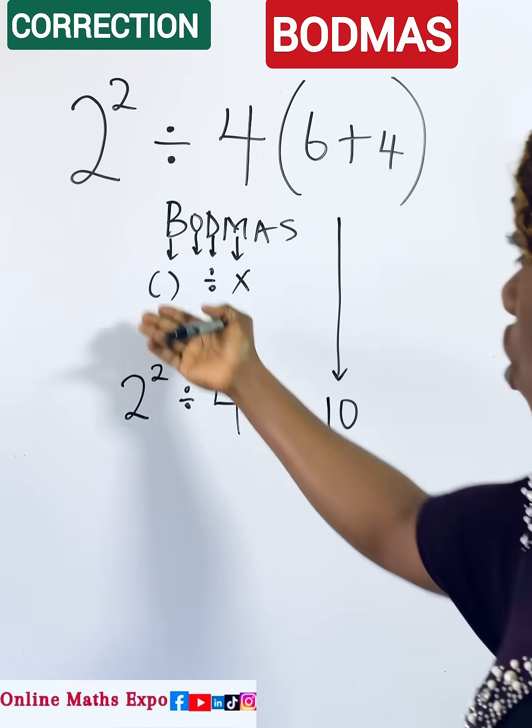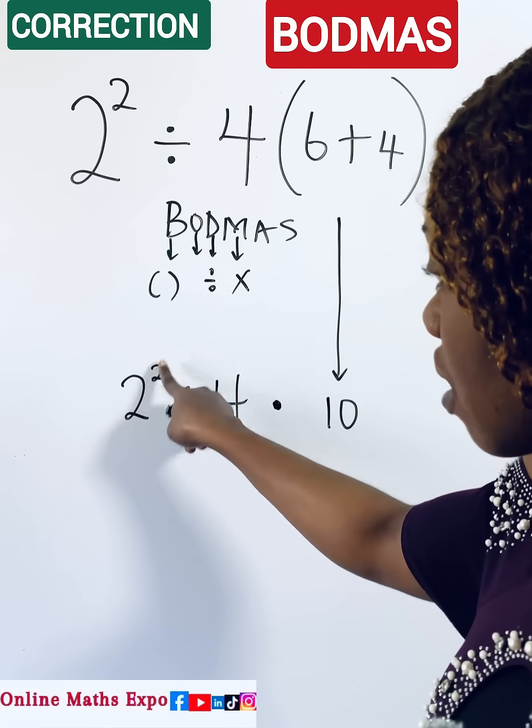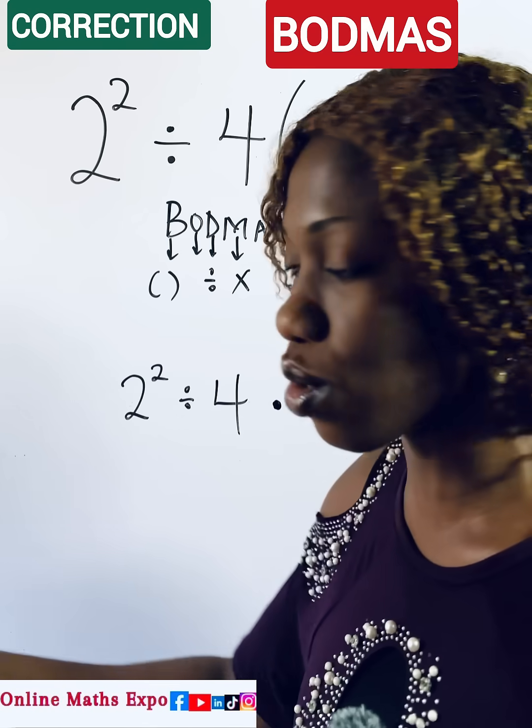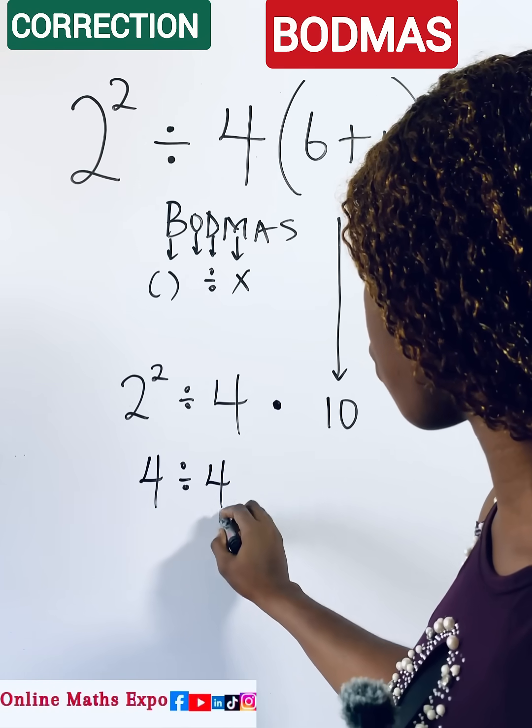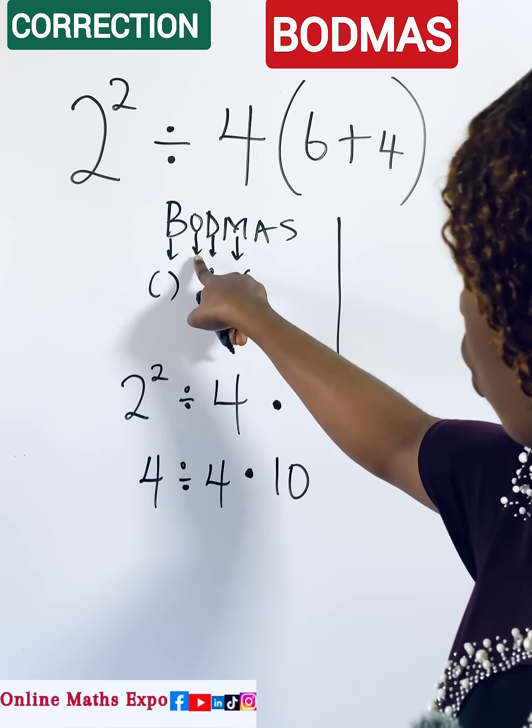You do next? If you are using your BODMAS, you are going to deal with your Order. This is the Order that deals with the power. So you do 2 raised to power 2, which is 2 times 2, and that will give us 4. So we have 4 divided by 4 multiplied by 10. Now having done this, you...